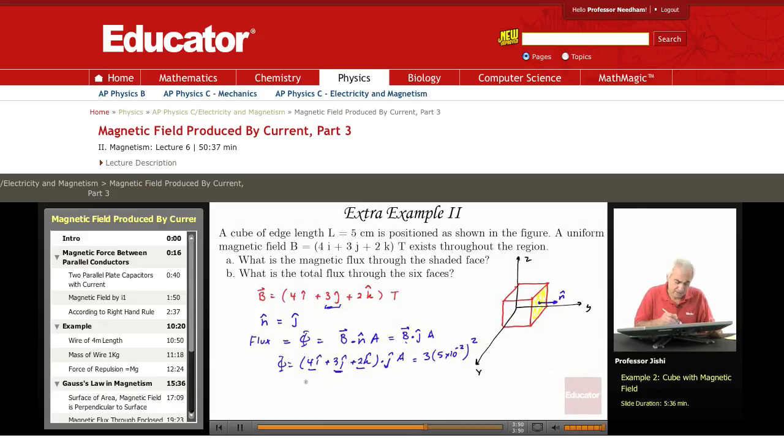So that gives us 75 times ten to the minus four Tesla meter squared, which is called a Weber, but you can just leave it as Tesla meter squared if you like.